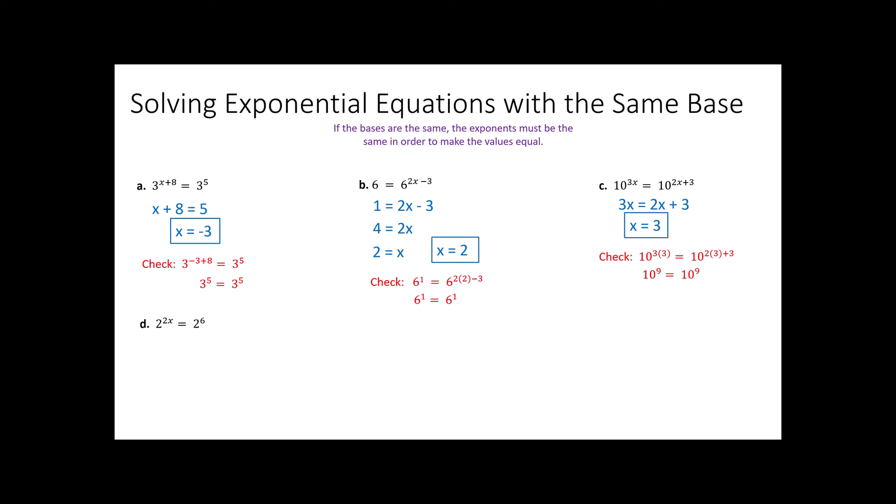2 to the 2x is equal to 2 to the 6. Once again I'm just going to set those exponents equal to each other. Divide both sides by 2. I get x is 3. Once again I can check that by plugging a 3 in for x and simplifying the two sides do match.